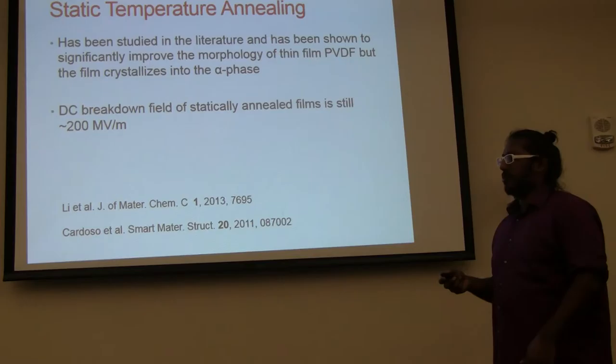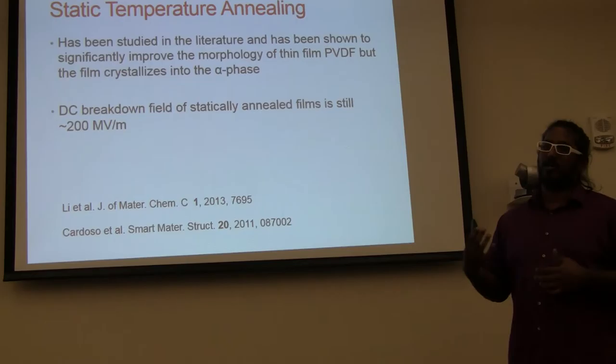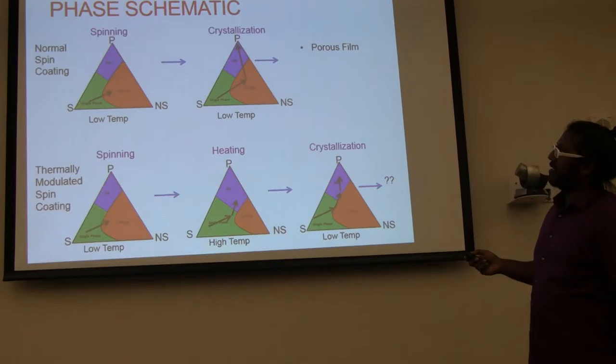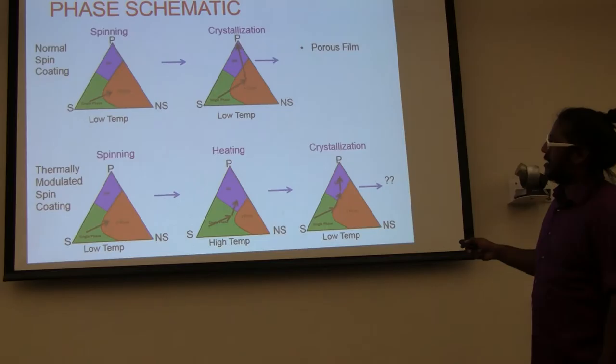So the first thing people ask usually is, why don't we just increase the temperature for the whole spin-coating process and keep it at a high elevated temperature? And so this has been done. But the problem is, when you do that at a high temperature, if you crystallize at a high temperature, you crystallize into the alpha phase, which is not ferroelectric. So we don't want those for many of our cool applications.